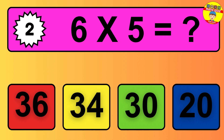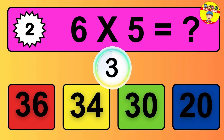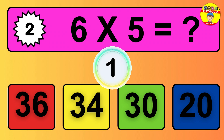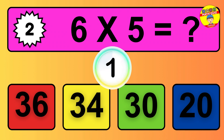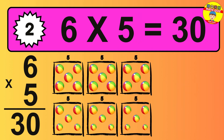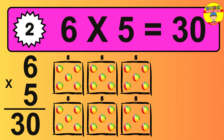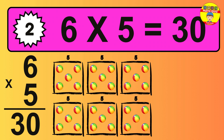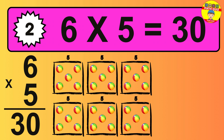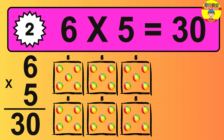Question 2. 6 times 5 equals what? The answer is 6 times 5 is 30. To calculate, we have 6 groups with 5 balls each one. So how many balls do we have? 30 balls.